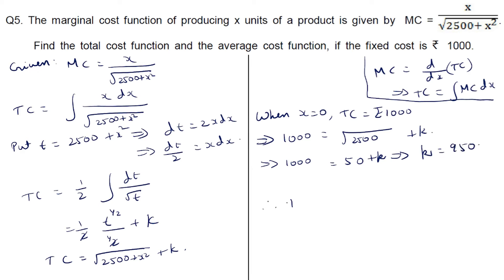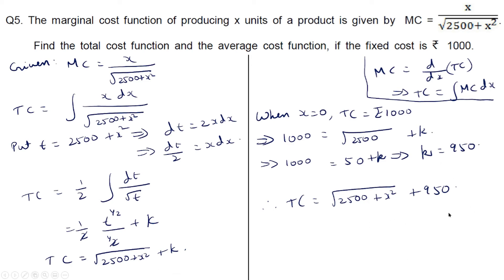Therefore the total cost is root of (2500 plus x squared) plus 950. We found k as 950, so this is the total cost function.